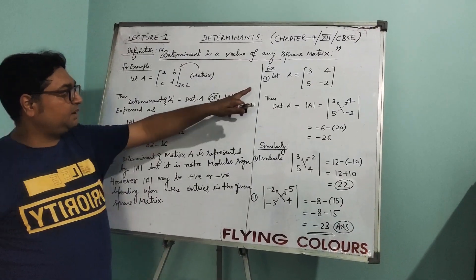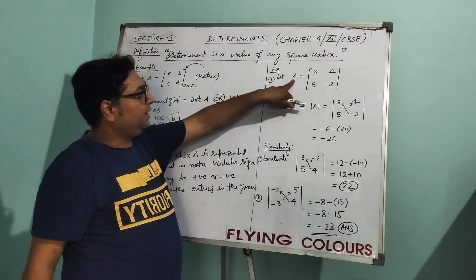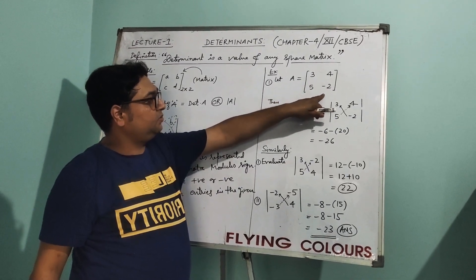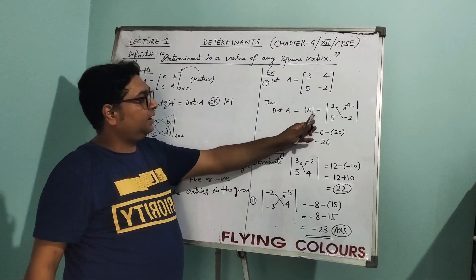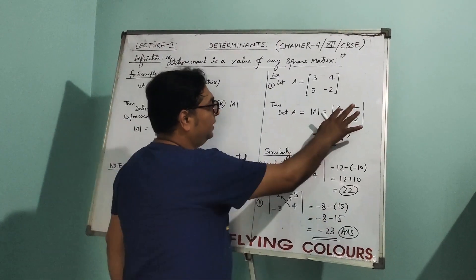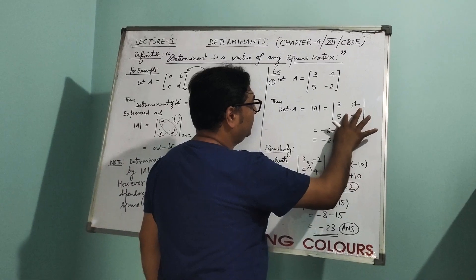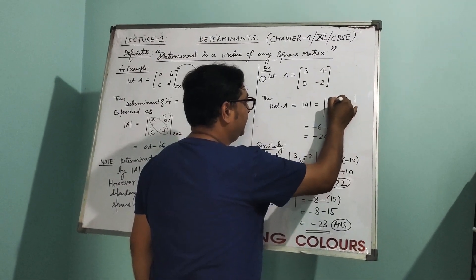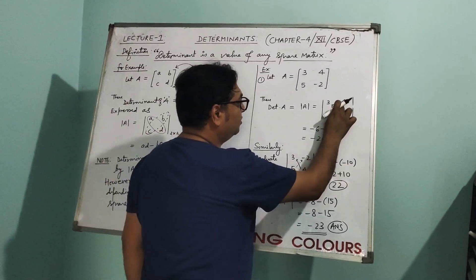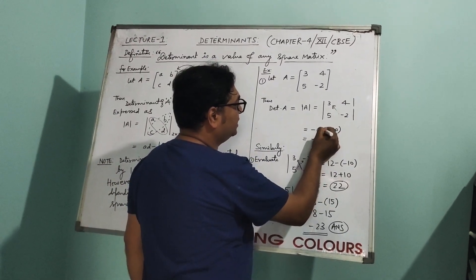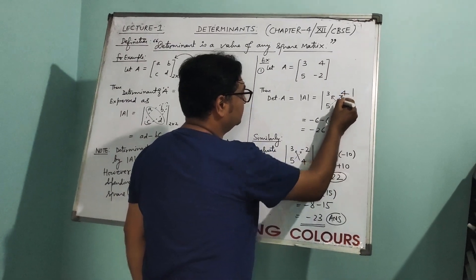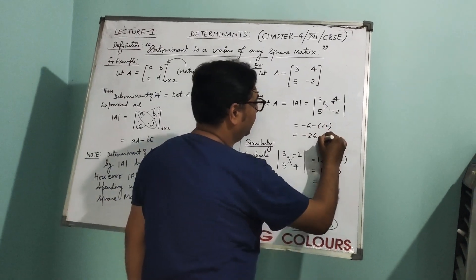Let's take an example. Let A be a square matrix of order 2 by 2: entries 3, 4, 5, minus 2. Then the determinant of A is found by taking the product of the principal diagonal — 3 into minus 2 = minus 6 — then use the minus sign by the property and take the product of the conjugate diagonal, which is minus 20. So the result is minus 20.